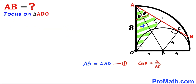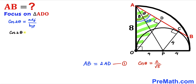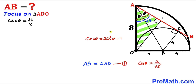Focusing on right triangle ADO, the whole angle at O is theta plus theta, giving us 2 theta. So cosine of 2 theta equals the adjacent side divided by the hypotenuse. Our hypotenuse is 8 and the adjacent side is AD, so cosine(2θ) = AD / 8.